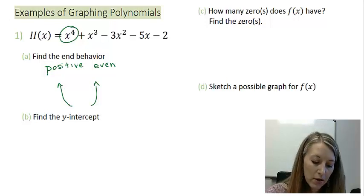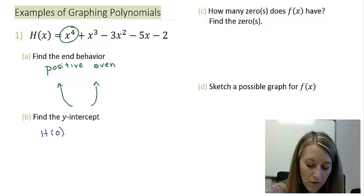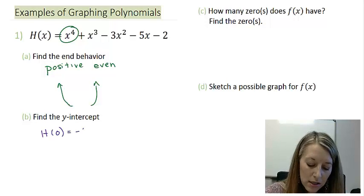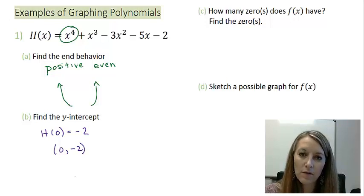To find the y-intercept, what we need to do is substitute zero in for our x value. We know everything is going to cancel out except for our constant value of negative 2. So that gives me a y-intercept of 0, negative 2.